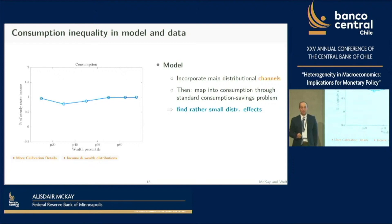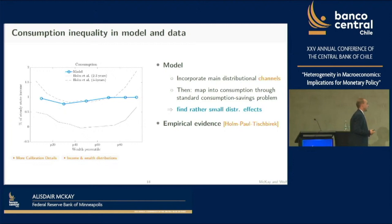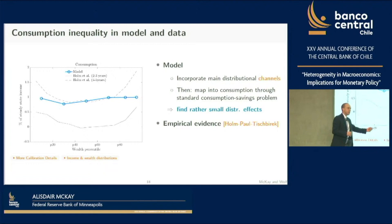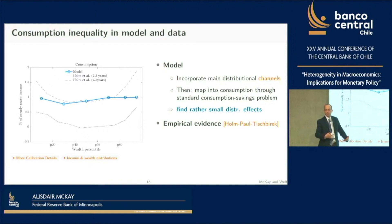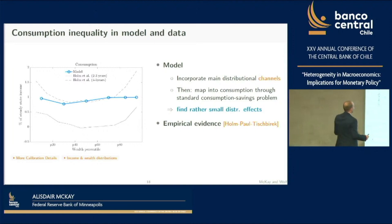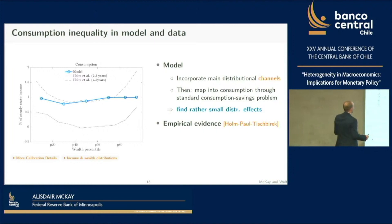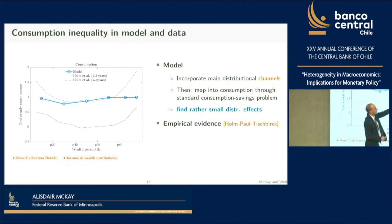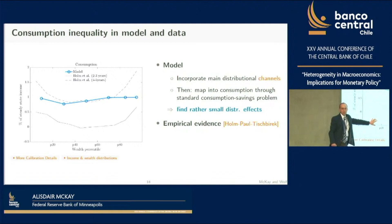To validate the model, here's data from Norway: Holm et al. look at percentiles of liquid wealth and how consumption changes after an expansionary monetary shock. I show two lines—one at a horizon of two to three years, another at four to five years. The fit isn't perfect, but the key point is that the low-wealth guy and the high-wealth guy respond similarly. So if you had a shock bad for the low-wealth end, you couldn't use expansionary monetary policy to boost them without also boosting the high-wealth end.